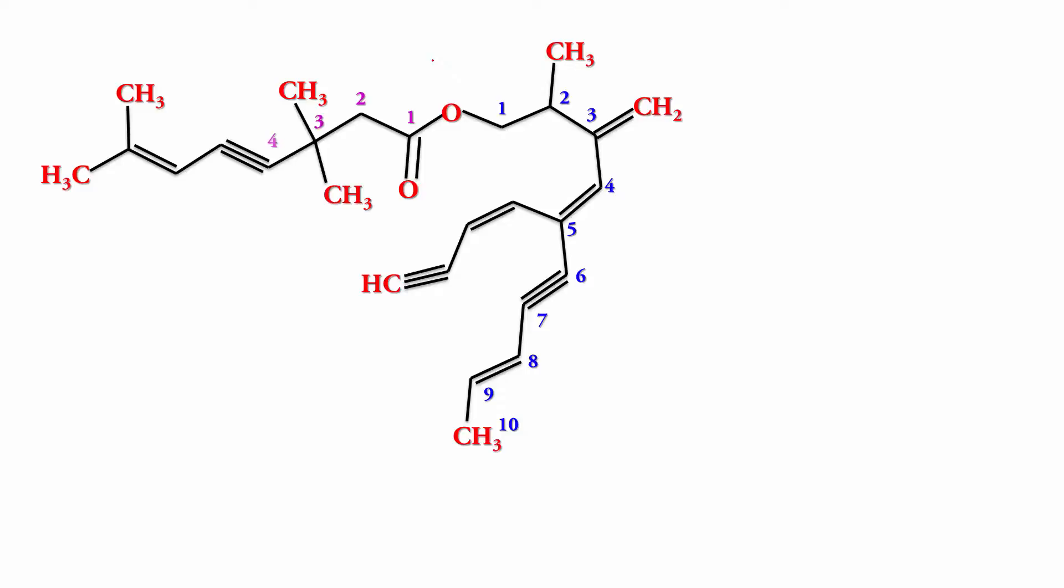One, two, three, four, five, six, seven, eight. And the side chain one, two, three, four. So what is the alkyl part? Write the substituents first. This is methyl. This is methylidine.